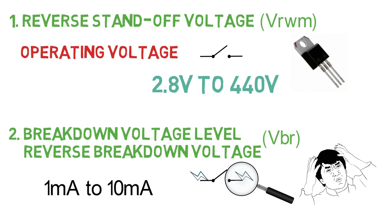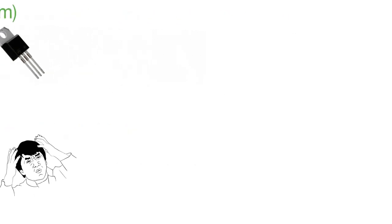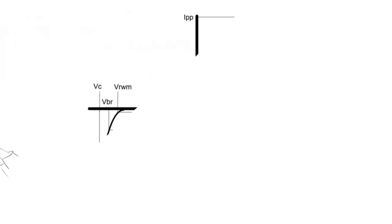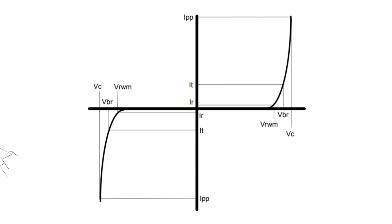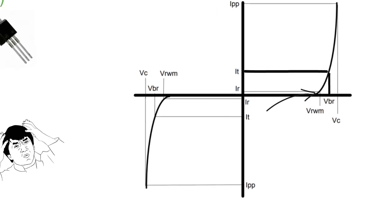Quite confusing, isn't it? It'll be very easy to understand if you look at this VI characteristic of the TVS diode. This is actually a bi-directional VI characteristic curve. This is the reverse standoff voltage of the diode. And this is the breakdown voltage at test current IT, which shows that the diode has started conducting.